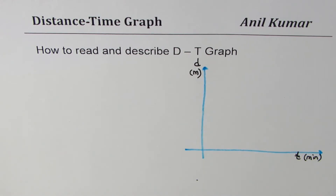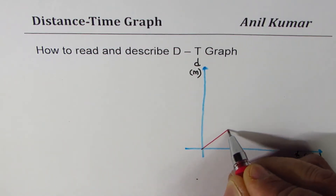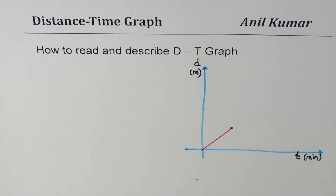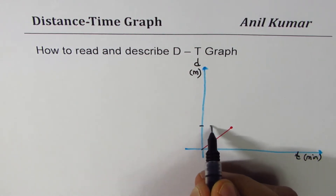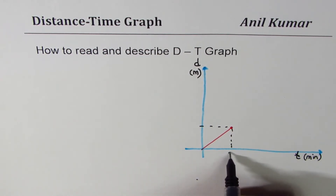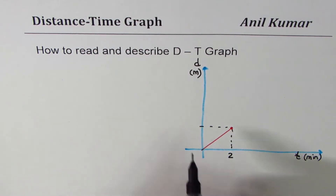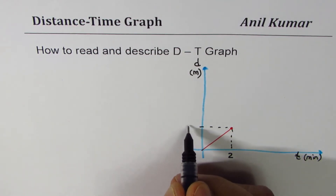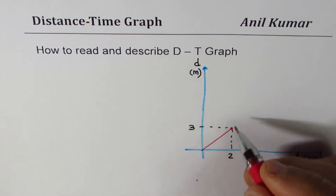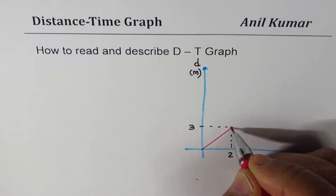Peter is walking away from home, and his distance is increasing as he walks. Let's say the distance covered by Peter in the first two minutes is three meters. So we're just marking that as three meters on the graph.